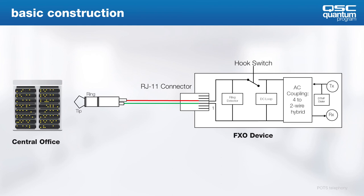Let's have a more detailed look at an FXO device. You can see the tip and ring — literally just two wires that go back to the service provider. Inside the FXO device, you can see the following: a ring detector, or simple ring circuit, which the AC ring voltage will excite if somebody is calling; the hook switch, which when closed connects the current loop. To the right of these components, there's an audio hybrid — the system of transformers used to add or remove audio signal from the line — and finally the DTMF generator that allows for user inputs.